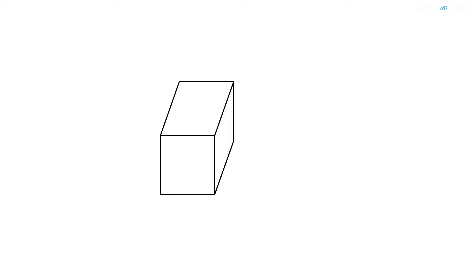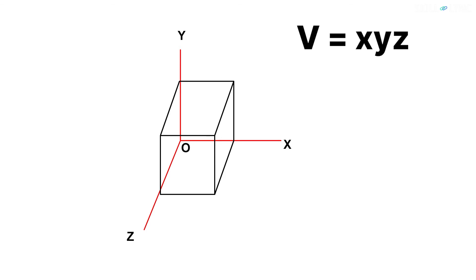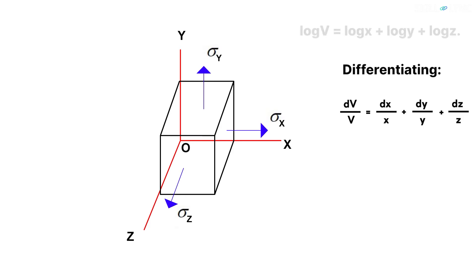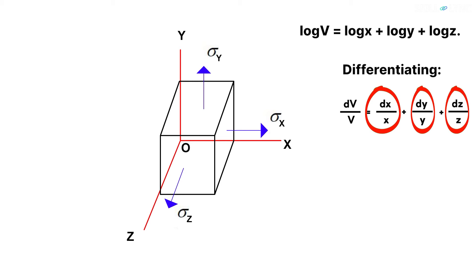Let's take an example of a body under volumetric stress. The stress acts in mutually perpendicular axes x, y, and z. Due to the stress, the volume of the body will change. Thus, the volumetric strain in this case can be calculated simply by taking the logarithm and differentiating it. It can be seen that the volumetric strain is the sum of the strains in the x, y, and z directions.